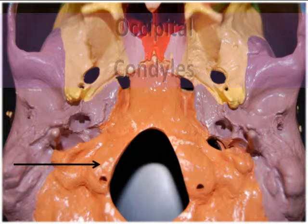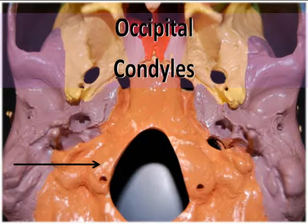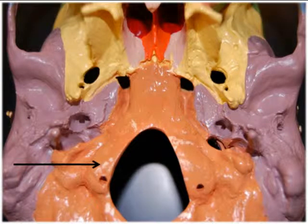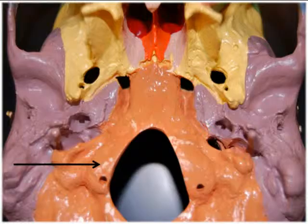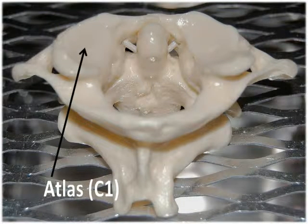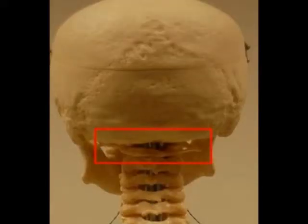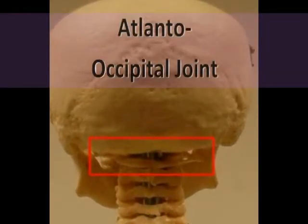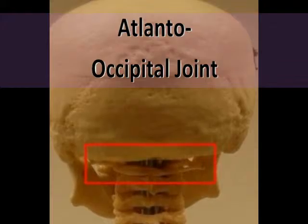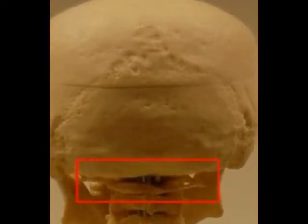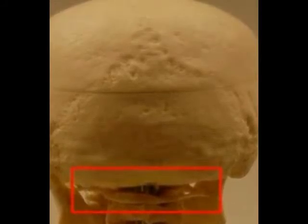Located on both sides of the foramen magnum are round processes known as the occipital condyles. These have shallow, convex grooves that articulate with the atlas, which is the first cervical vertebra, C1. Together the occipital condyles and the atlas form the atlanto-occipital joint. This joint allows us to nod our heads up and down in the yes motion.